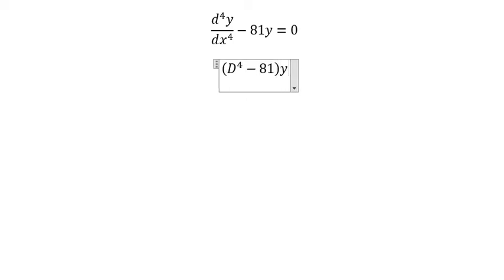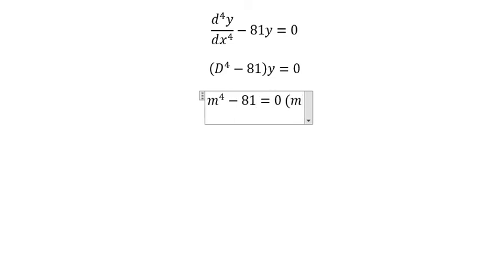So we change this one into m to the power of 4 minus 81 equals to zero, and m that should be the auxiliary root.